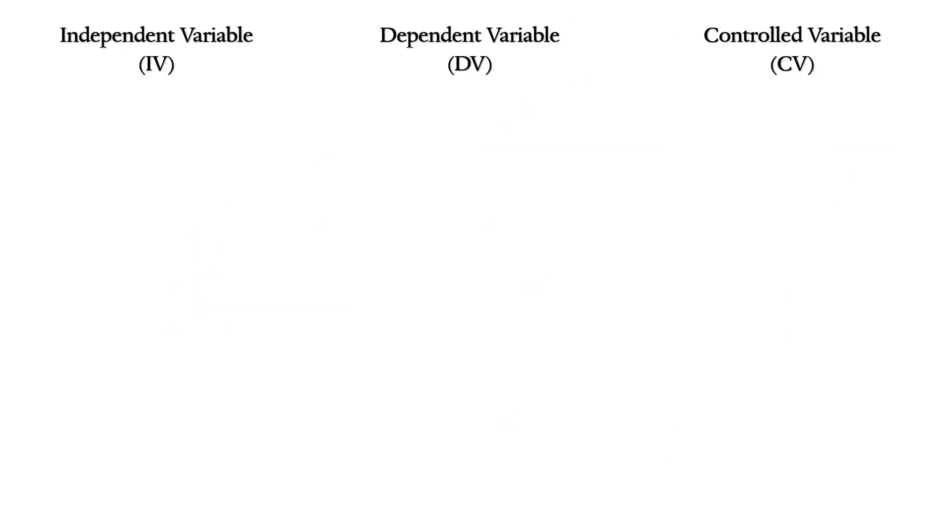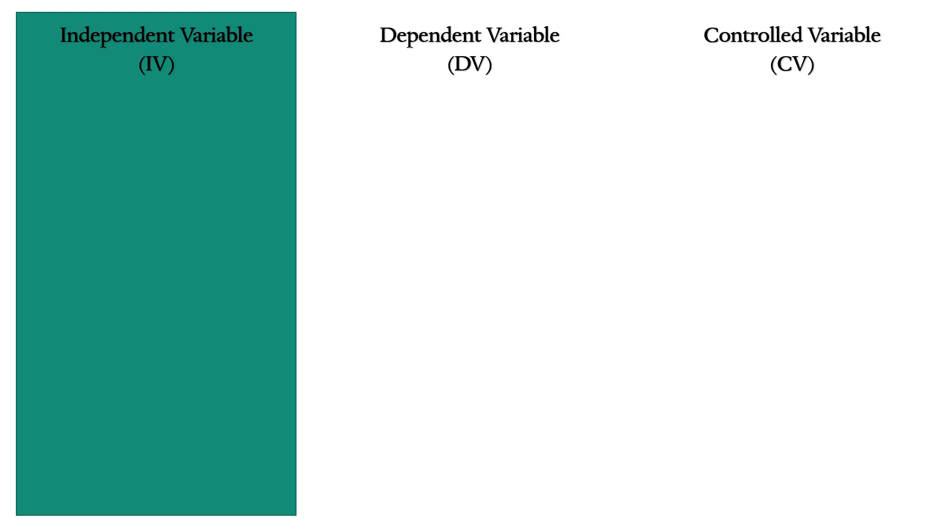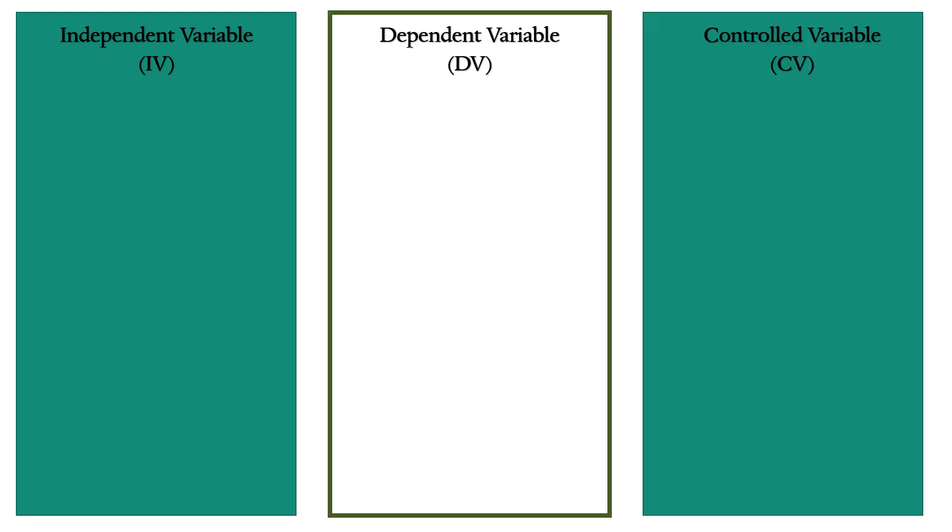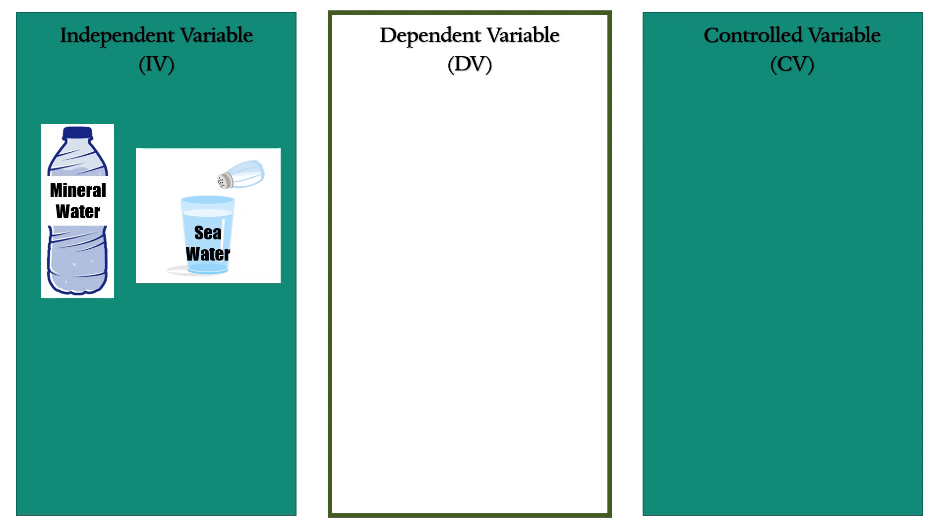Time now to identify the independent variable, dependent variable, and controlled variable. Let's recall your problem. You wanted to know in which type of water do plants grow best. So, can you identify now what is the main character in the experiment? Very good! The main character are the types of water. We have mineral water, seawater, and deep well water. These are our independent variables.